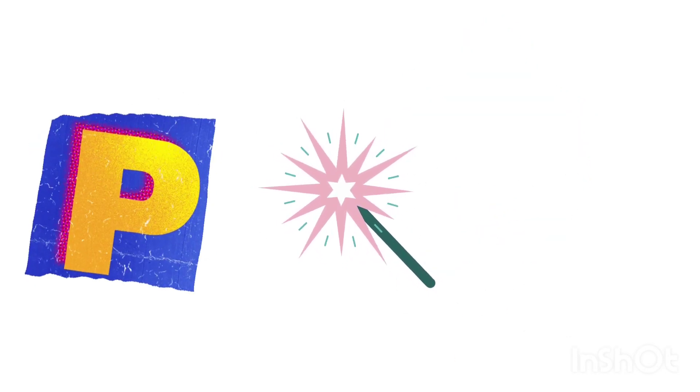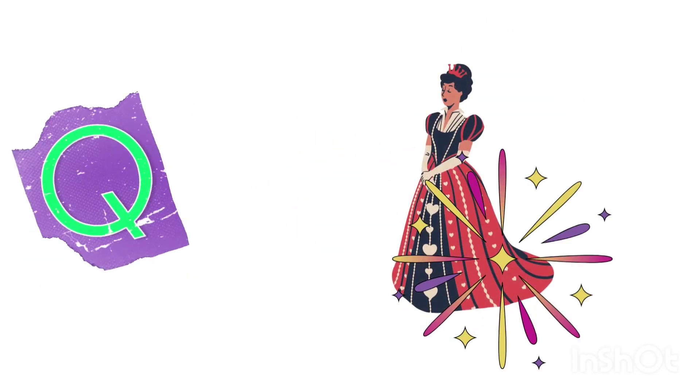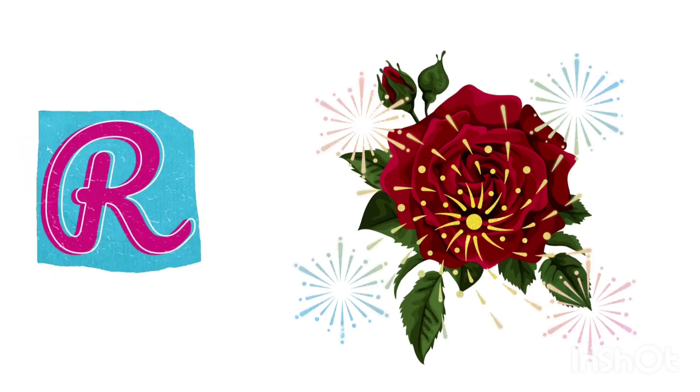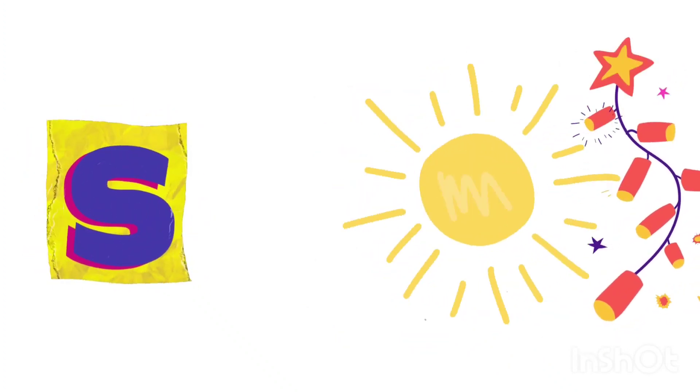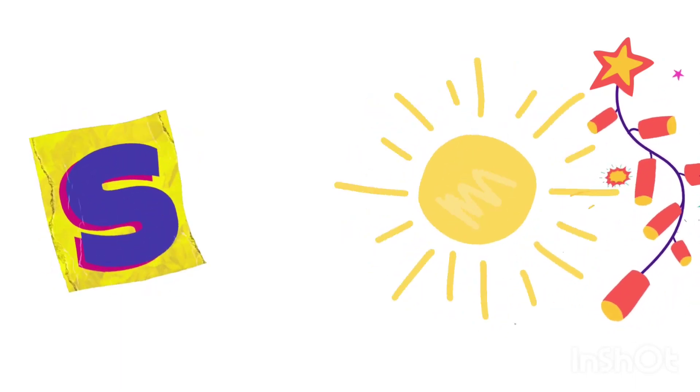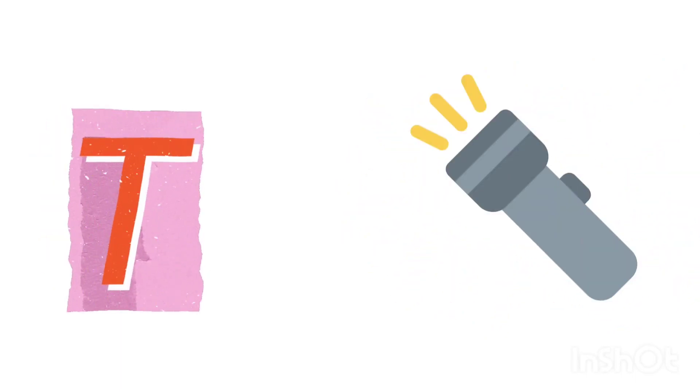P for penguin, Q for twin, R for rose, S for sun, T for torch.